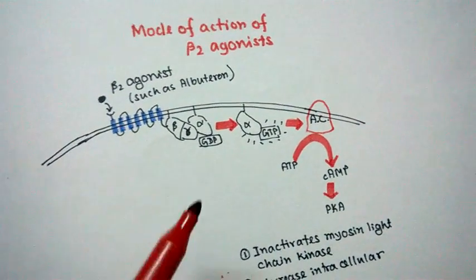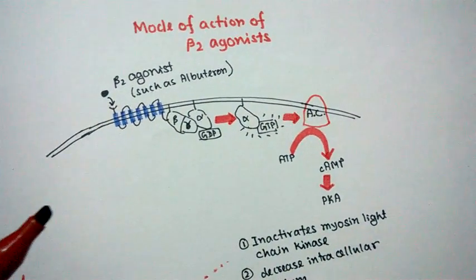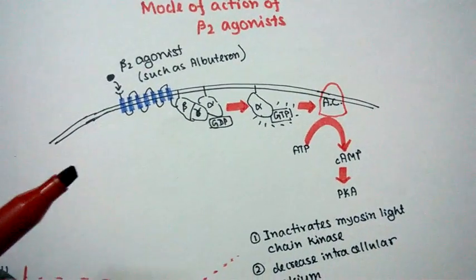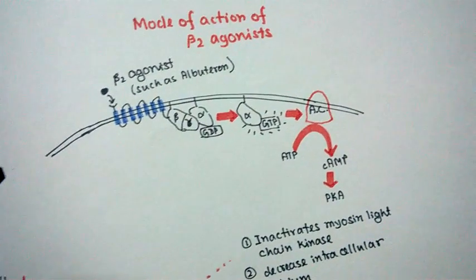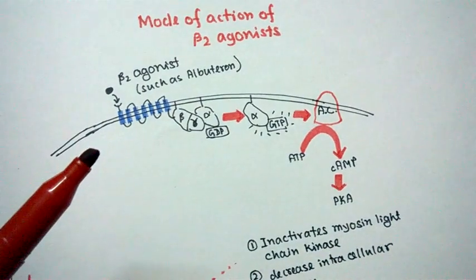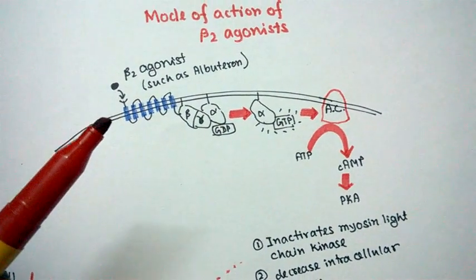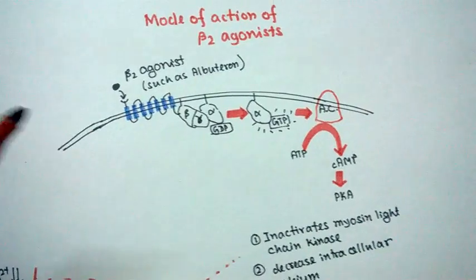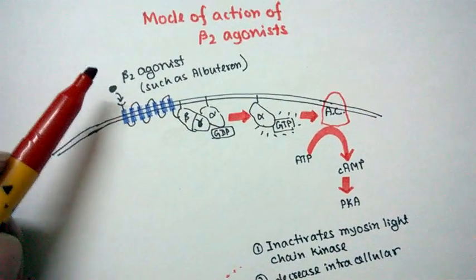In this video, I'm going to describe how this beta-2 agonist imparts its effect—that means how beta-2 agonist helps in bronchodilation. Bronchodilation means the relaxation of the smooth muscles of the bronchioles. So how does beta-2 agonist perform this, and what are the exact signaling mechanisms beneath this?